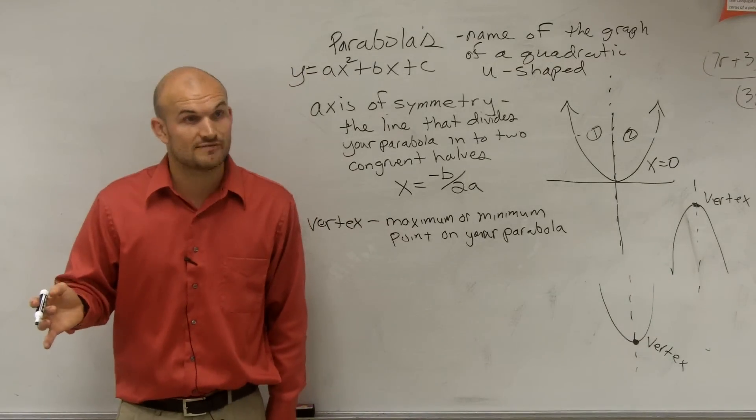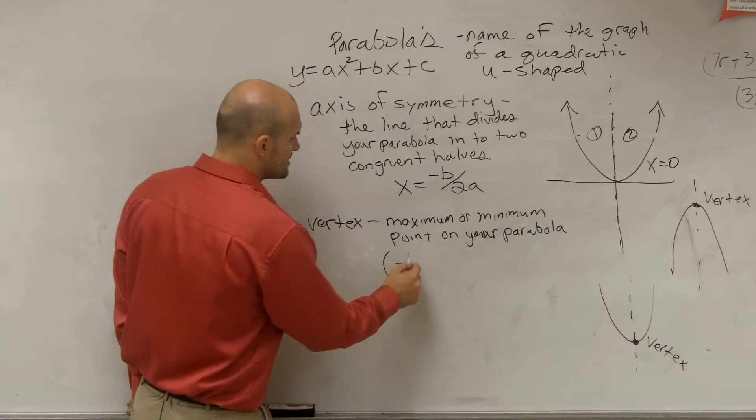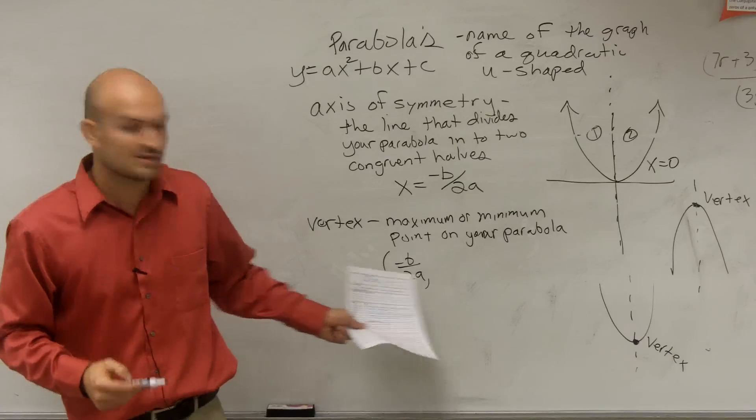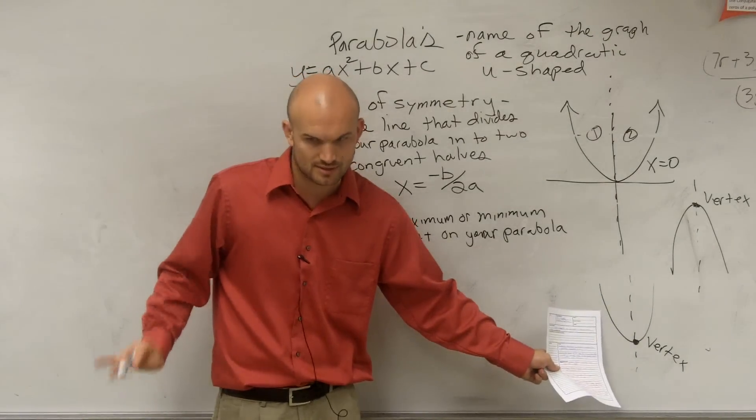So if you want to find the vertex of an equation, your X value is opposite of B divided by 2A. That's the X value of your vertex, right? Because your X value lands on your axis of symmetry. Hold on. Excuse me. Just stop.